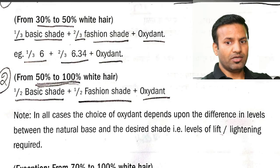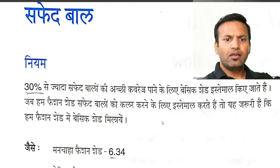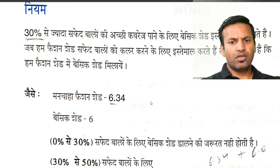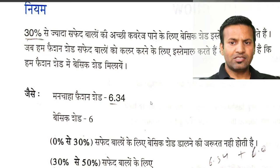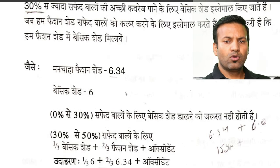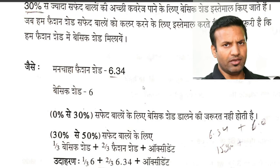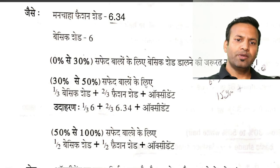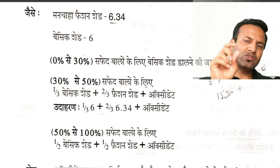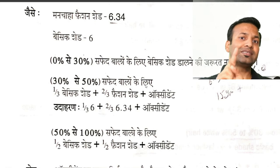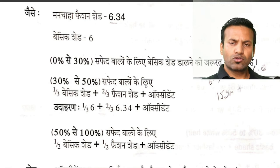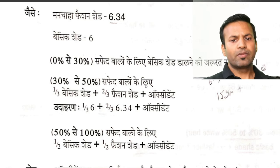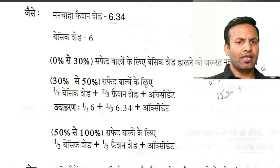अब हिंदी में पढ़ते हैं — सफेद बाल नियम: 30% से ज्यादा सफेद बालों की अच्छी coverage पाने के लिए basic shade इस्तेमाल किए जाते हैं। जब हम fashion shade सफेद बालों को color करने के लिए इस्तेमाल करते हैं, तो यह ज़रूरी है कि fashion shade में basic shade मिलाना चाहिए। जैसे client को fashion shade 6.34 चाहिए — यह example है — तो उसमें base shade 6 number जाएगा। 6.34 में base है number 6 — dot से पहले आता है उसको base बोलते हैं। तो वही 6 का एक base color tube और लेंगे और add करेंगे।